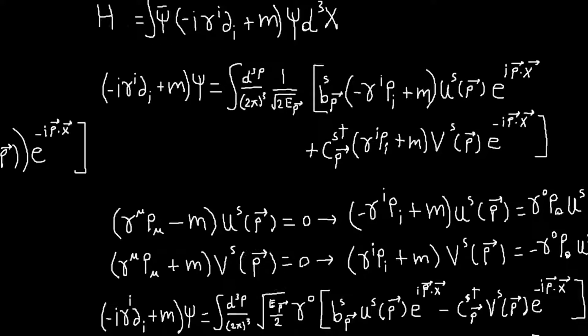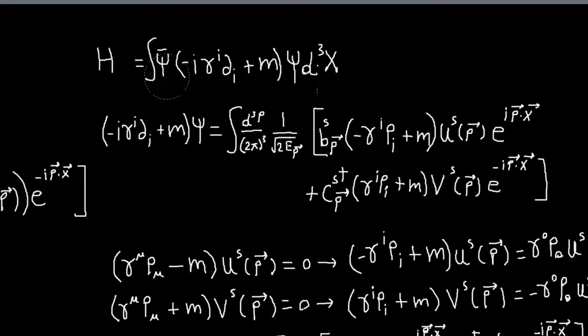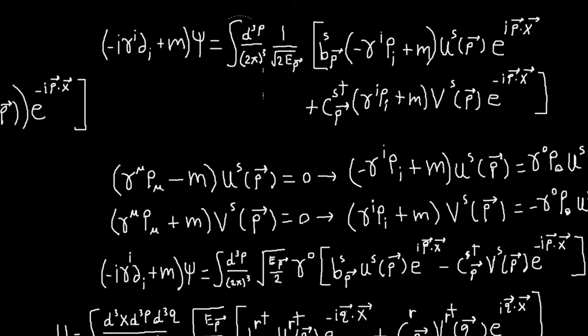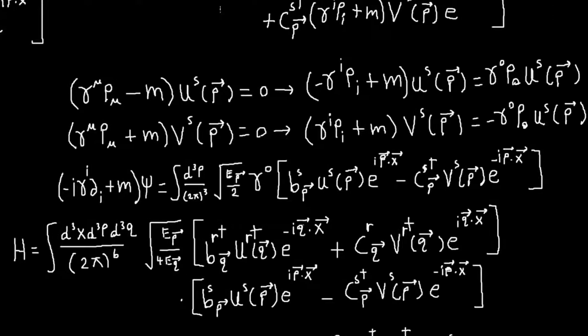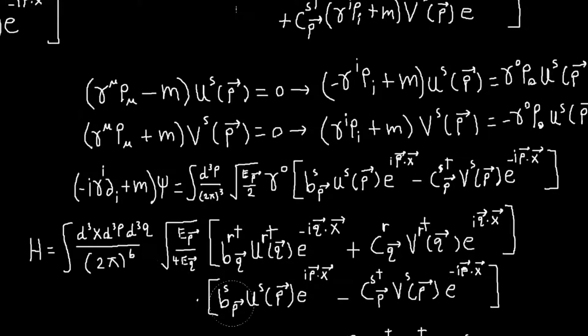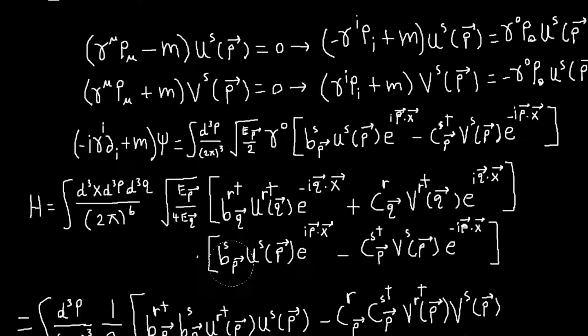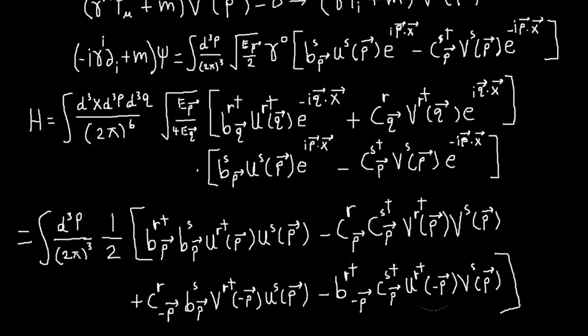And now all we need to do is, to compute our Hamiltonian, is do the integral of psi bar times this expression. So I've written that out here. It's, you know, the usual thing we have, this integral over space, all space, and these two dummy momentum integrals for our two fields. And we foil this out, and we get this.